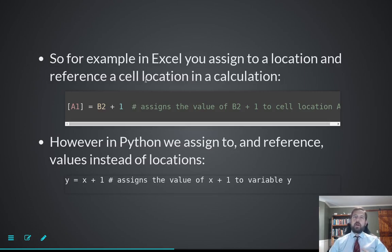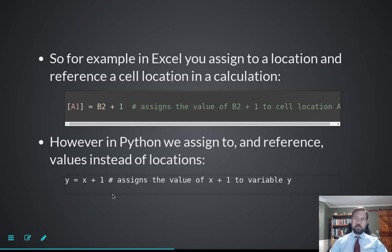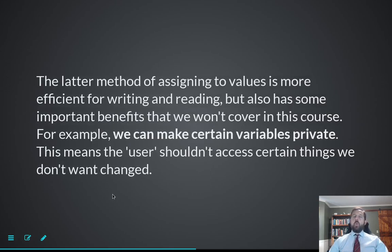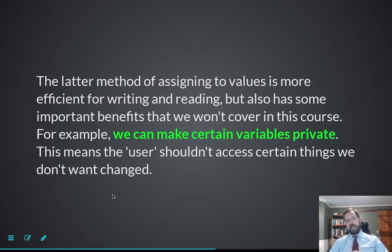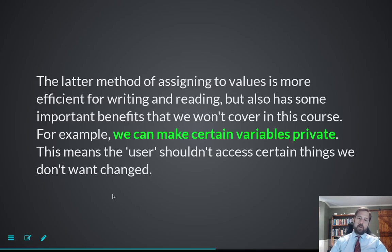Locations can change and that's a big problem. For example, in Excel you reference A1 as whatever is in B2 plus 1 — which is a problem if your new value isn't in B2. But in Python you just say y equals x plus 1. Python also has nicer mechanisms to hide things from the user, which is important because there's so much out there in Python — it's harder to share spreadsheets, but in Python you're always using other people's code.